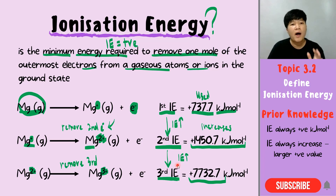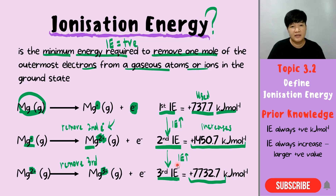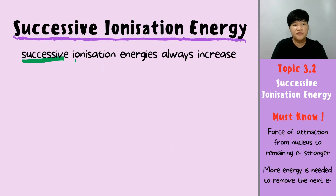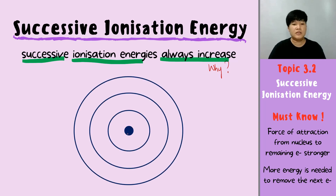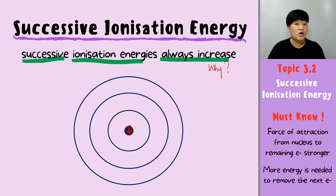So the question is: why does the ionization energy increase every time when we remove the next electron? The successive ionization energy will always increase from the previous. Why will it keep increasing? It's quite simple — because in the nucleus, there is a positive charge, and that positive charge will cause a force of attraction towards the electrons.